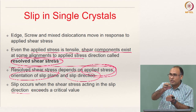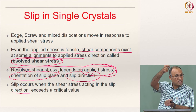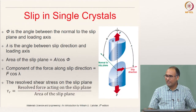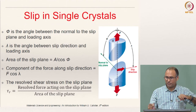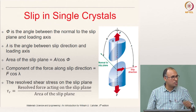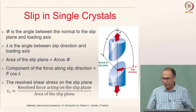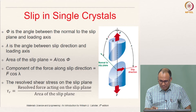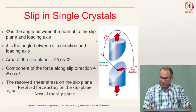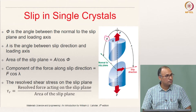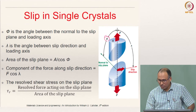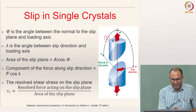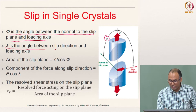That required shear stress depends on the applied load and the orientation of that load with respect to the slip plane and slip direction. Consider a single crystal material with a tensile load applied. Define angle phi as the angle between the loading direction and the slip plane normal, and angle lambda as the angle between the slip direction and the loading axis.